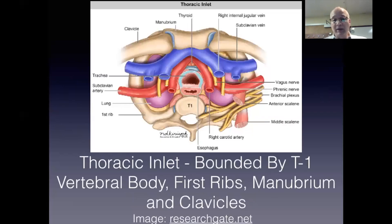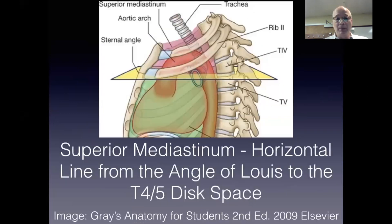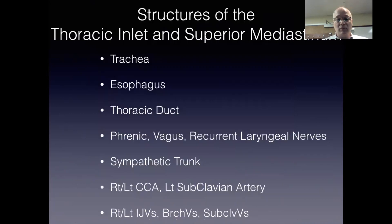The thoracic inlet is bounded by osseous structures, specifically the T1 or T4 body posteriorly, the clavicular heads and manubrium anteriorly, and the first ribs on either side. The floor of the supermediastinum is defined as a plane extending from the angle of Louis posteriorly to the T4-5 disc space. The roof of the supermediastinum is the thoracic inlet. These are all of the structures passing through both the thoracic inlet and supermediastinum, and I will present cases including most of these.